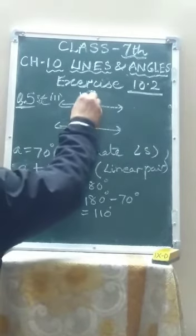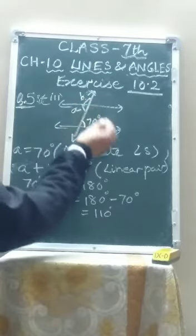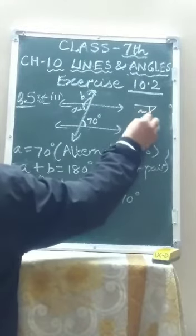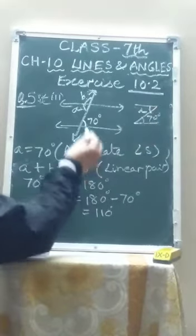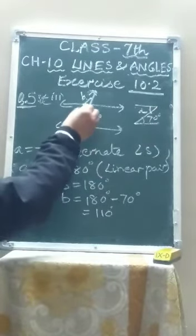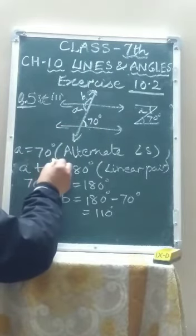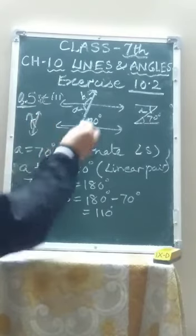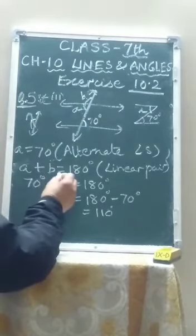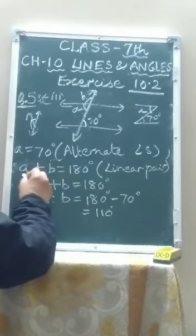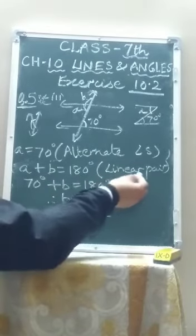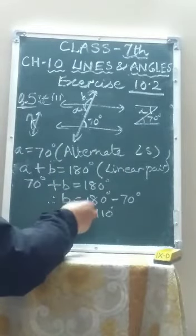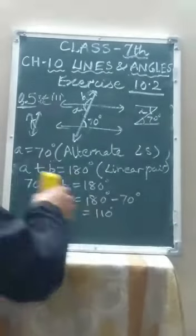Question number 5, third part. Angle A and 70 degrees lie on opposite sides of the transversal and a Z-shape is formed by them — these types of angles are called alternate interior angles and they are equal. So A equals 70 degrees. Now A and B lie on a straight line, forming a linear pair, and the sum of angles on a straight line is 180 degrees. So A plus B equals 180 degrees. Therefore 70 plus B equals 180, which means B equals 110 degrees.